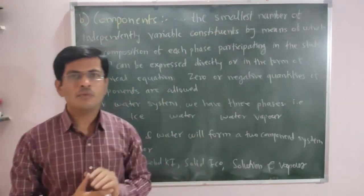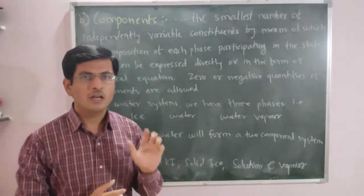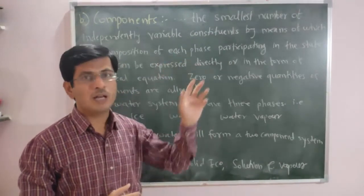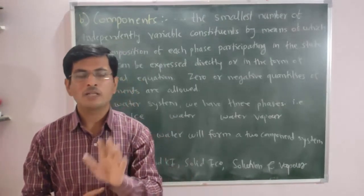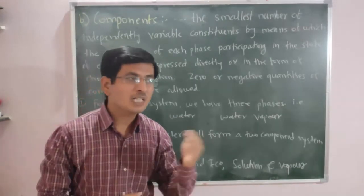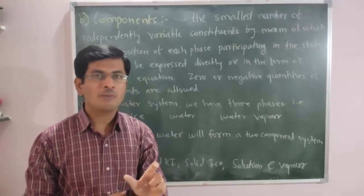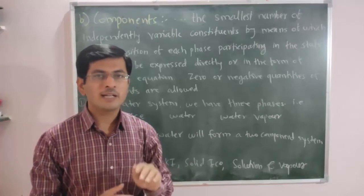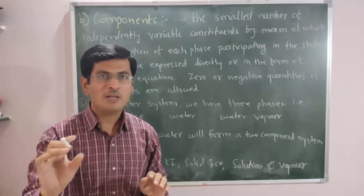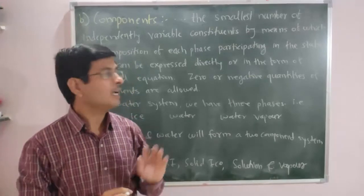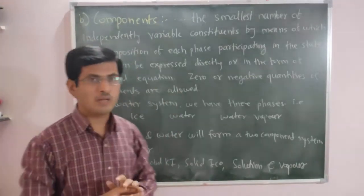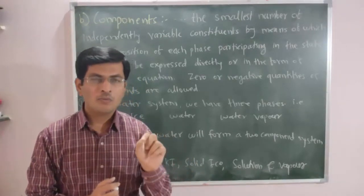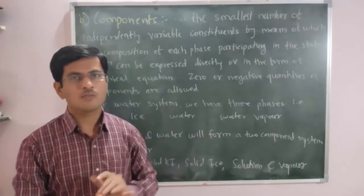It is the smallest number of independently variable constituents, by means of which the composition of each phase can be explained. There are two conditions: either the constituent name can be stated directly for that phase, or it can be explained with the help of a chemical equation. That number of constituents is the number of components of that system.